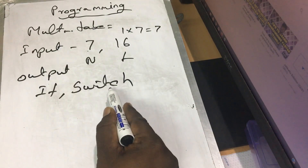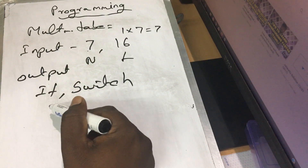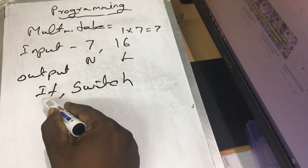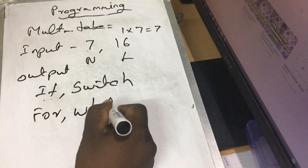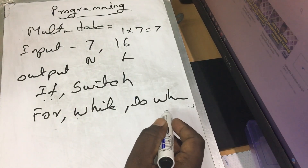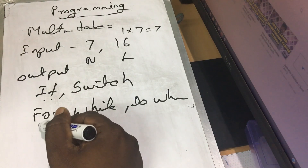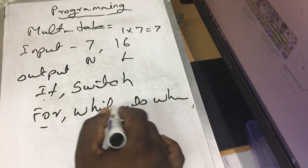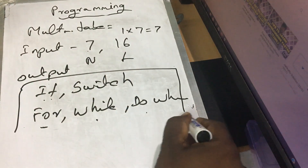If you use a condition, you can use if and else, or else if — or switch. That means for looping, you can use for, while, or do-while. If you use this loop, you can use for or while depending on the situation.